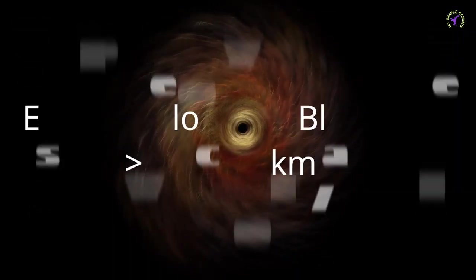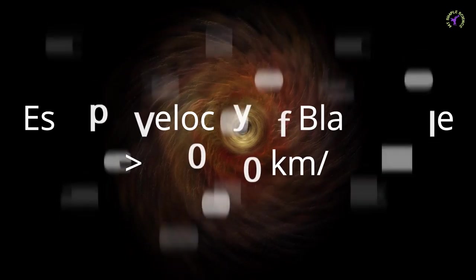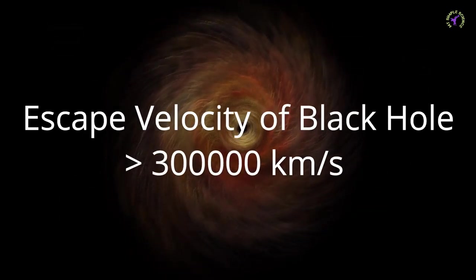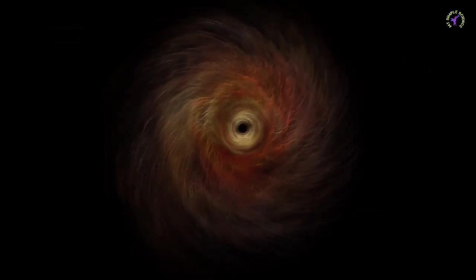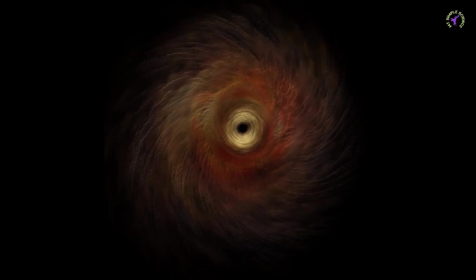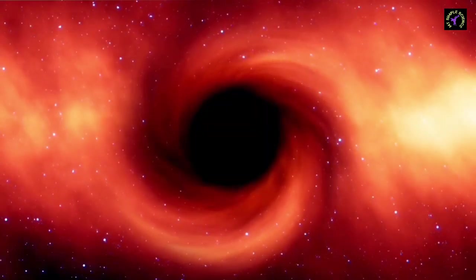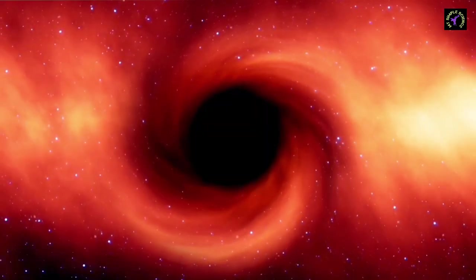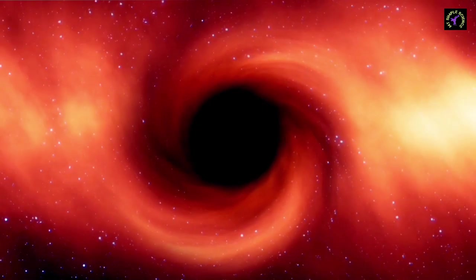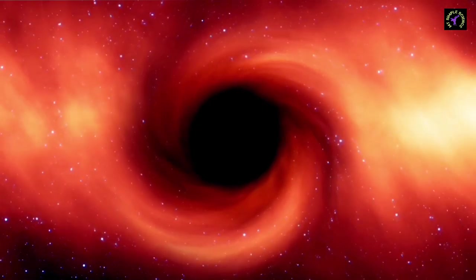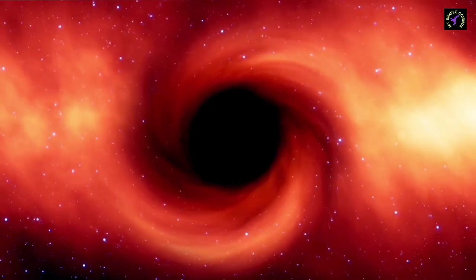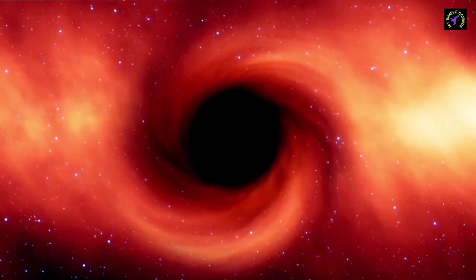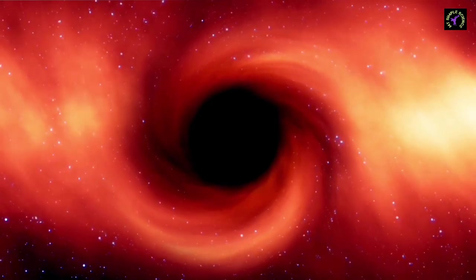The escape velocity of a Black Hole is greater than 3 lakh km per second, which is greater than the speed of light. This means light also cannot escape from a Black Hole. This is what a Black Hole is — an object from which light doesn't escape. That's why we cannot see it, hence it is named Black Hole.